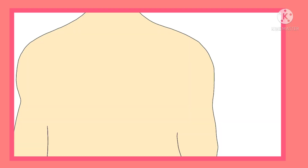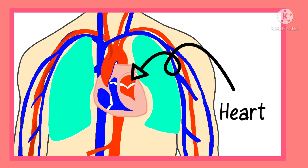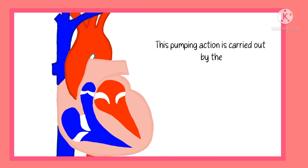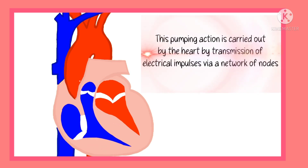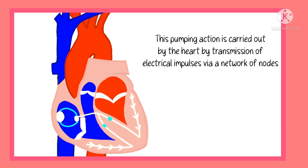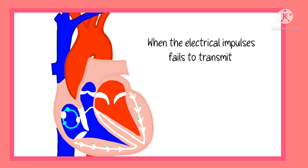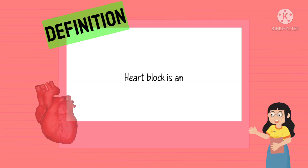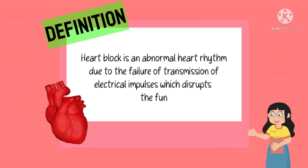Heart block. The heart is a pumping organ which pumps blood to all parts of the body. This pumping action is carried out through the transmission of electrical impulses via a network of nodes. When the electrical impulses fail to transmit, the heart's pumping is reduced or stopped, causing a series of problems. By definition, heart block is an abnormal heart rhythm due to the failure of transmission of electrical impulses, which disrupts the normal functioning of the heart.